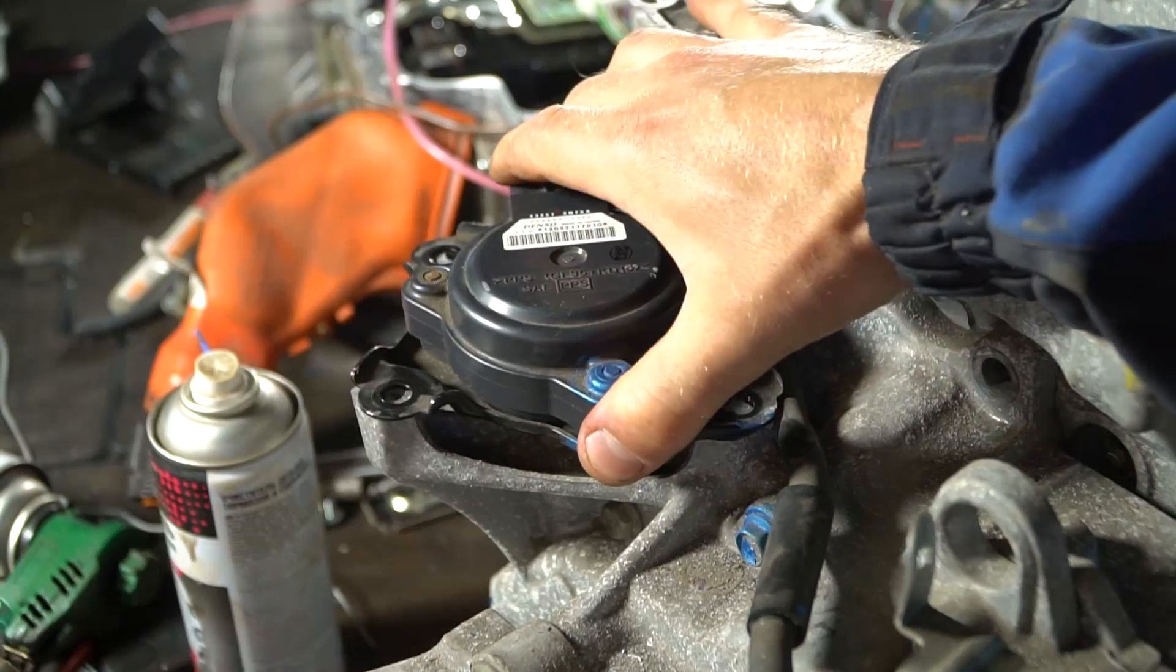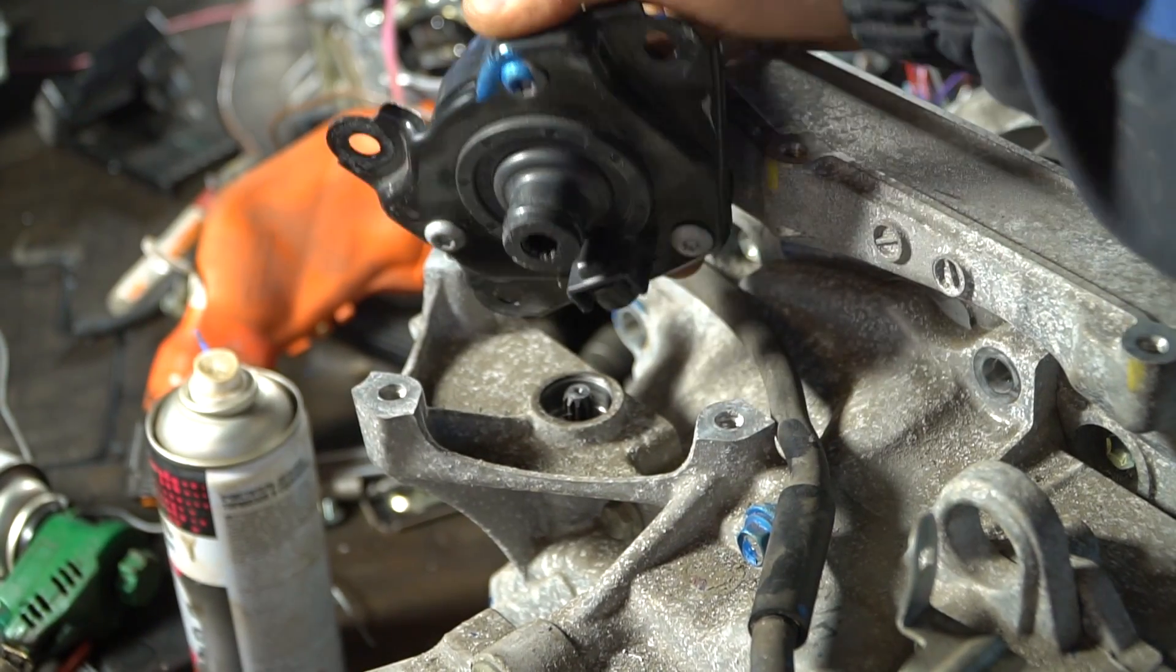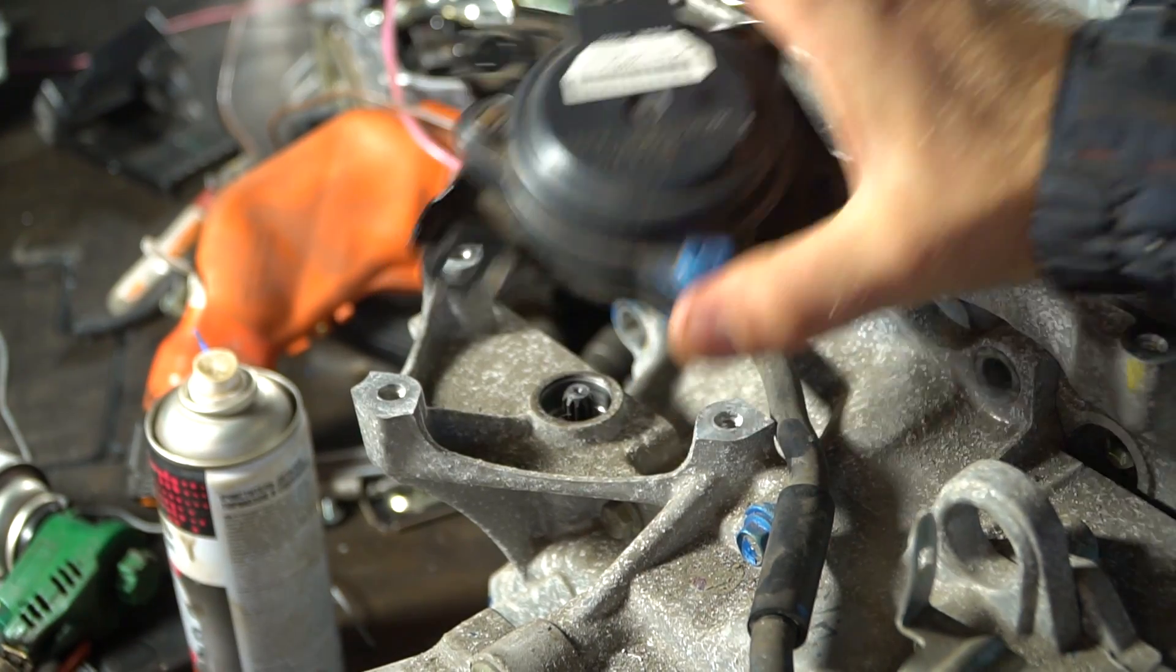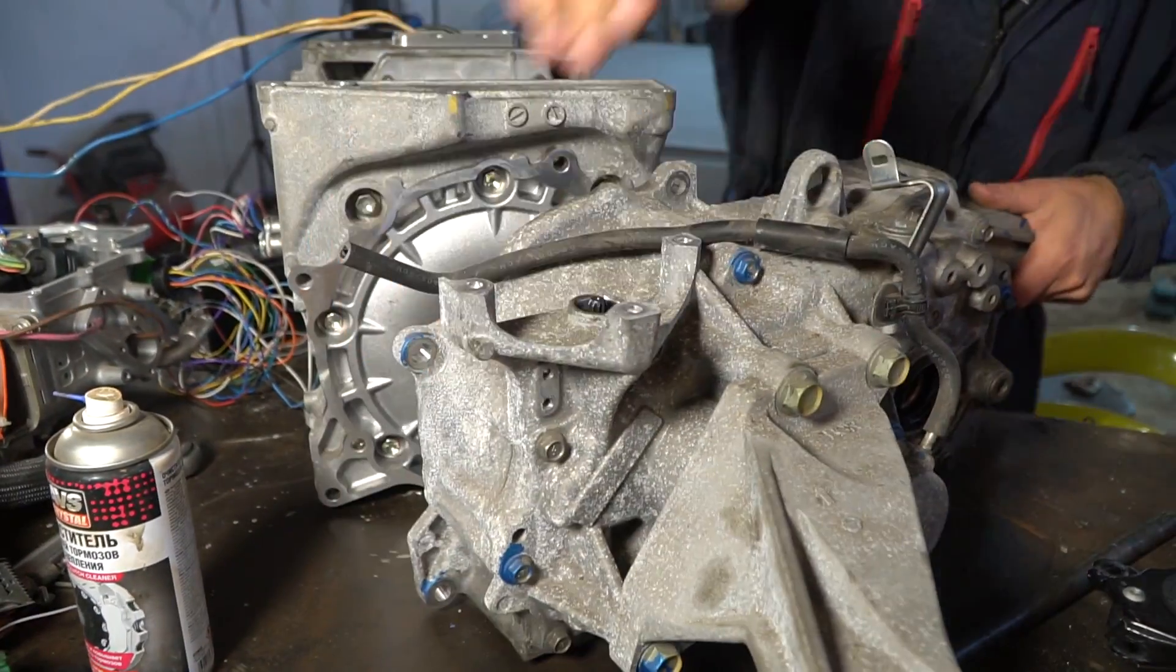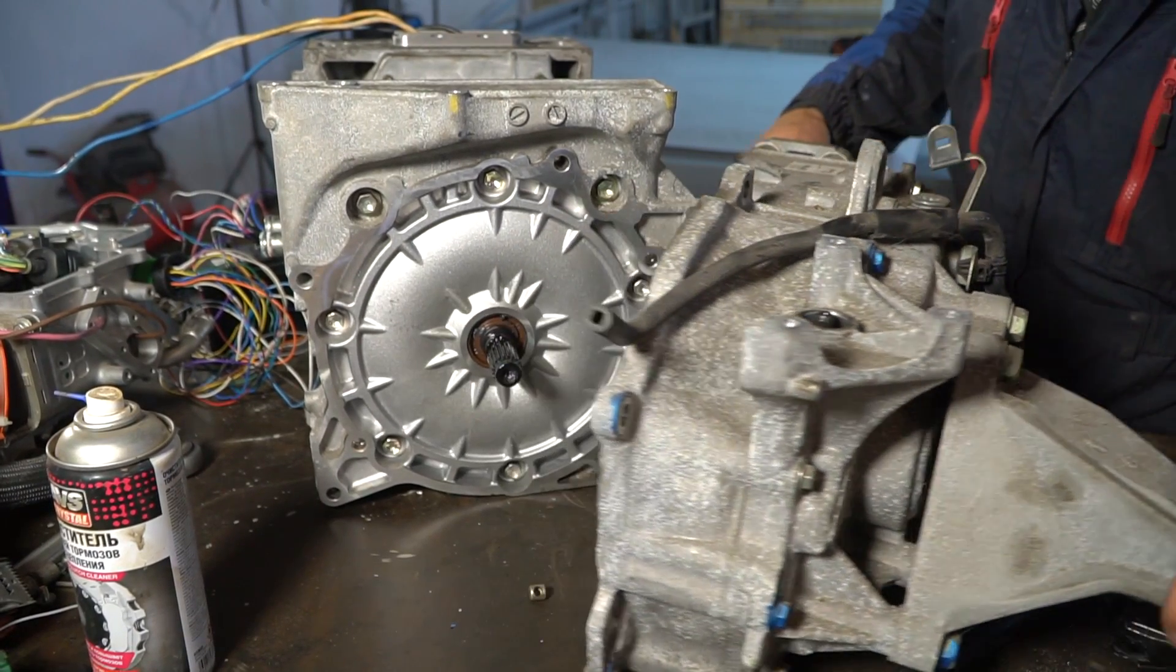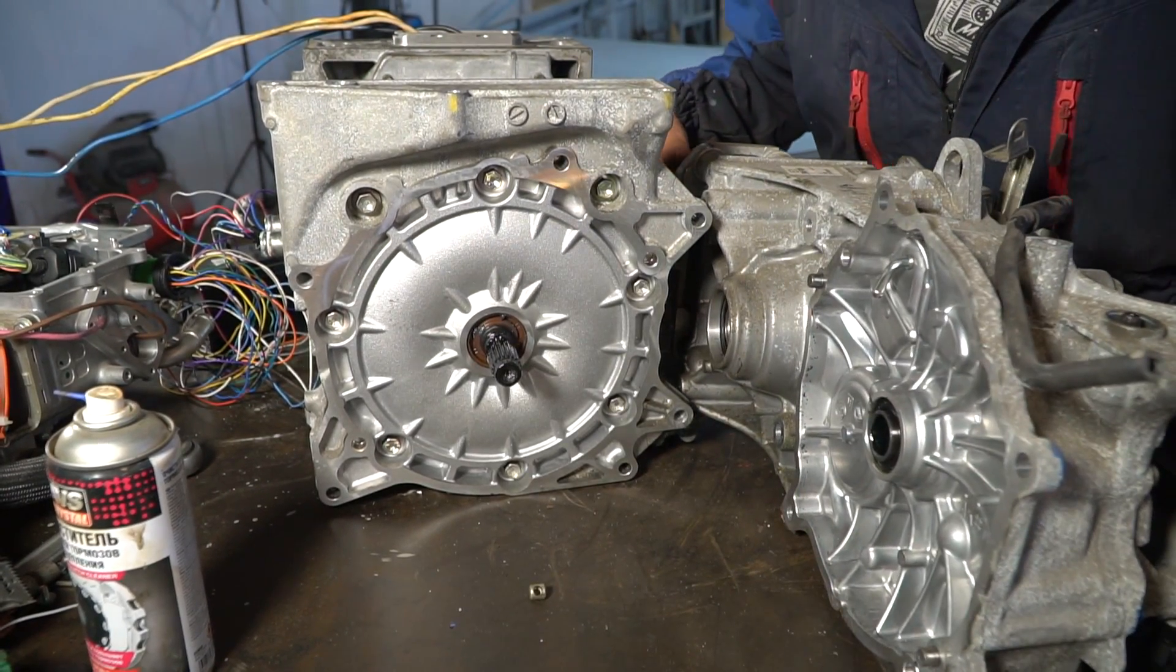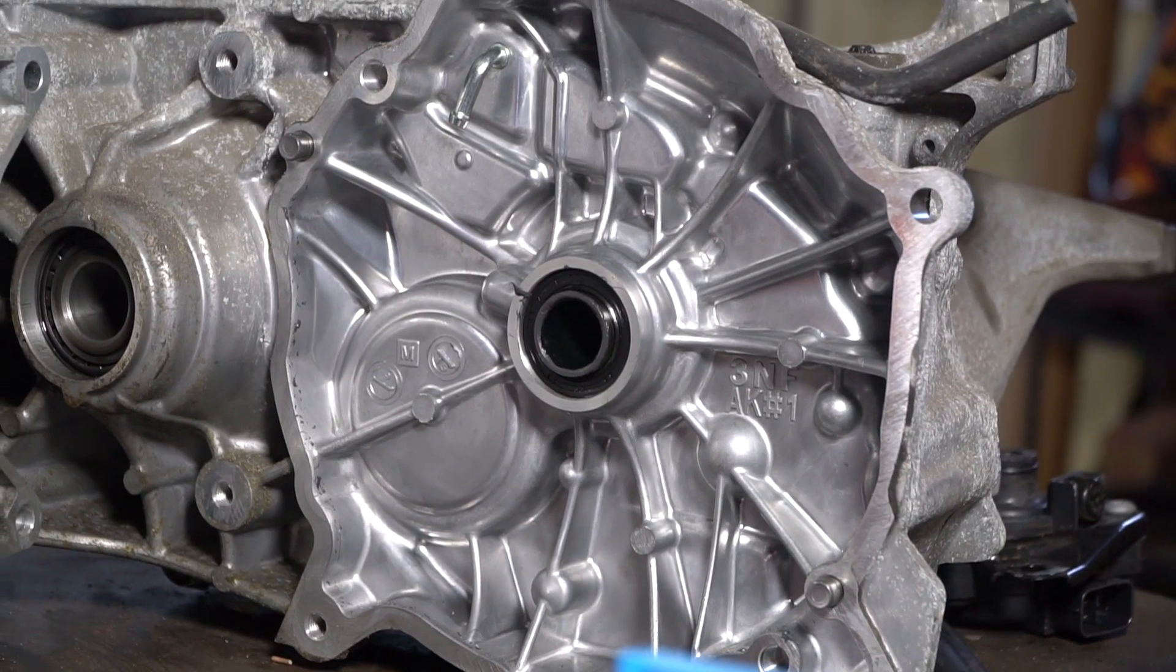I took off the servo and the reduction gear itself so that it wouldn't interfere. Yet without it, the engine looks small, and it's hard to believe that such a little fellow can produce 110 horsepower at the standard voltage.